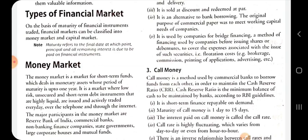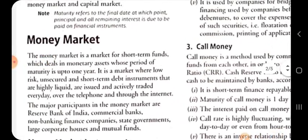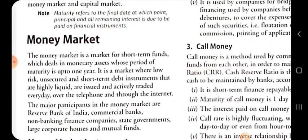There are basically two types of the financial market. The first one is the money market and second is the capital market. Money market is a market for short term funds which deal in monetary assets whose period of maturity is up to one year. It is a market where low risk, unsecured and short term debt instruments that are highly liquid are issued and actively traded every day over the telephone and through the internet.